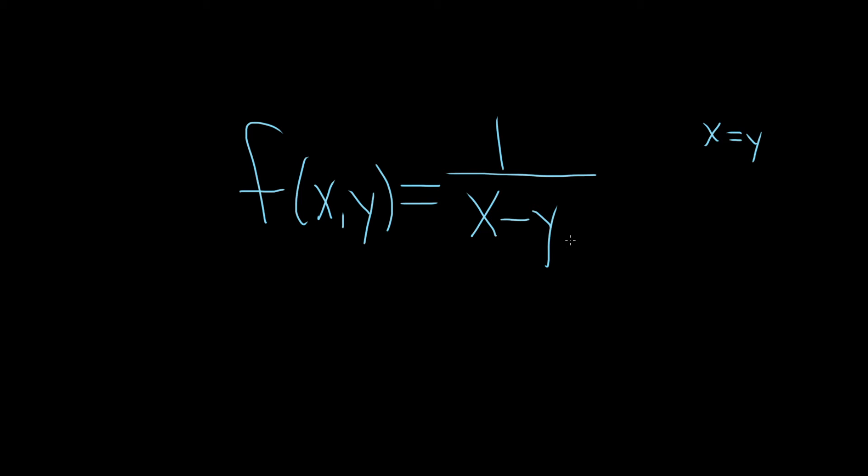Because you would get x minus x, so you get 1 over 0, and that's no good. So we just can't allow this to happen. As long as they're not equal, we're good. We're never going to get 0 on the bottom.